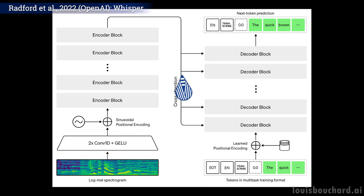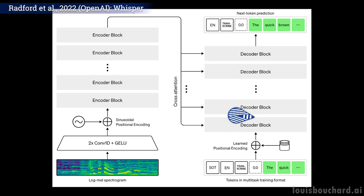The decoder will predict what we call tokens from all this information, which are basically each word being said. Then it will repeat this process for the next word using all the same information as well as the predicted previous word, helping it to guess the next one that will make more sense.